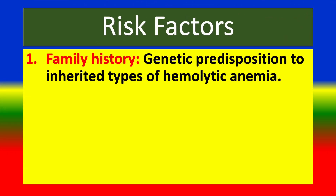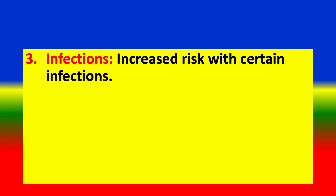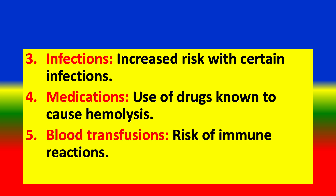Risk Factors: (1) Family history — genetic predisposition to inherited types of hemolytic anemia. (2) Autoimmune diseases — conditions such as lupus. (3) Infections — increased risk with certain infections. (4) Medications — use of drugs known to cause hemolysis. (5) Blood transfusion — risk of immune reactions.